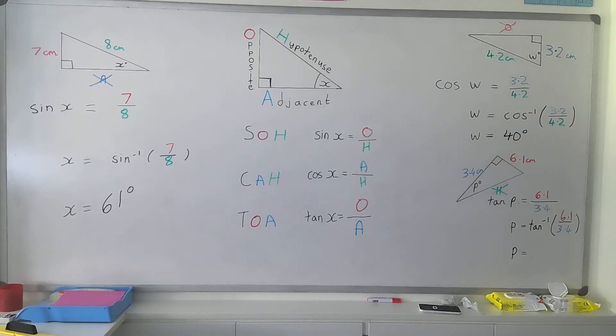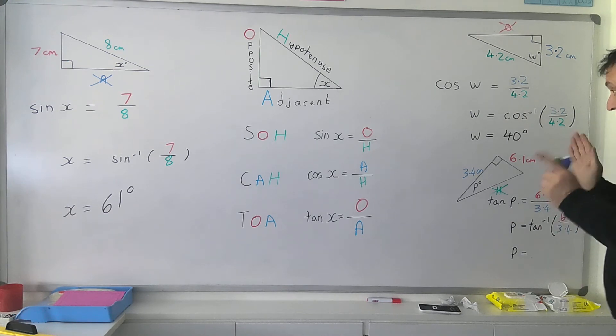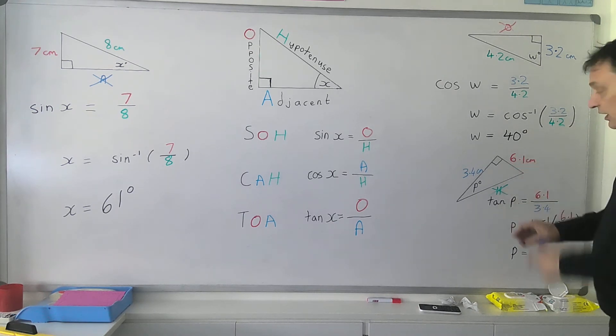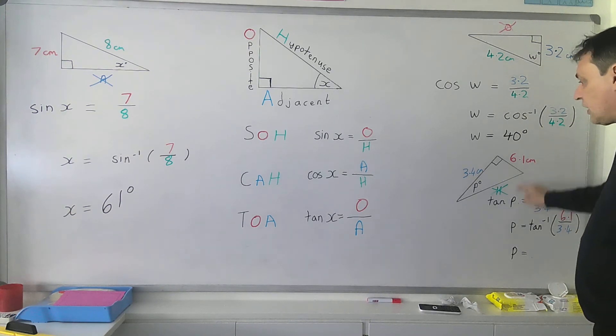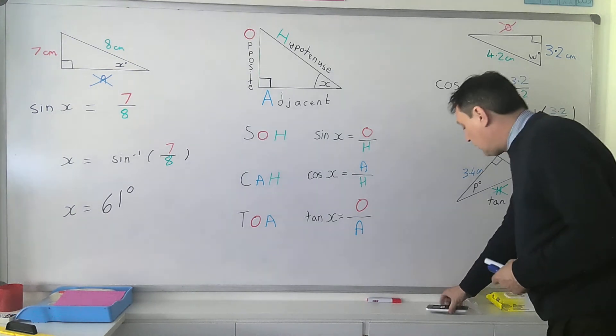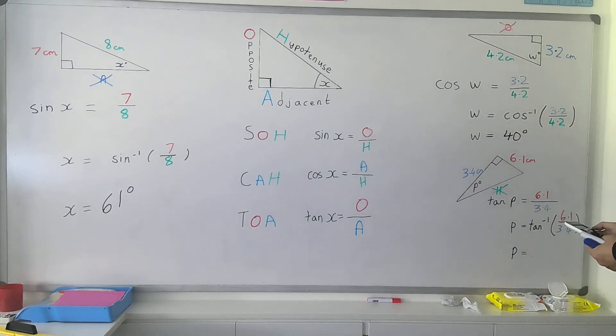Finally, we'll do one with tan. As you can see, we've got angle P here, we've got 6.1 with our opposite side and 3.4 as our adjacent side. Make sure you stick, even though that 6.1 is bigger than 3.4, which can look unusual, you've got to stick to the rule that 6.1 does go on top. You're allowed to have a bigger number on top when it's tan. All it means is your answer's going to be wider than 45 degrees.